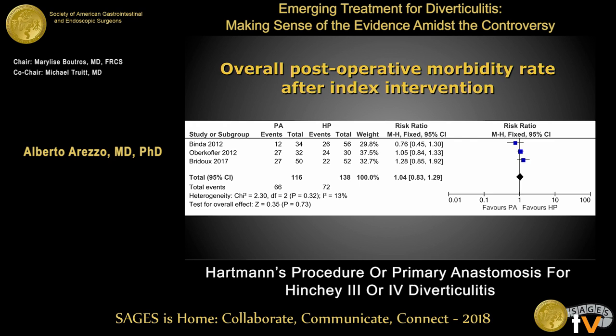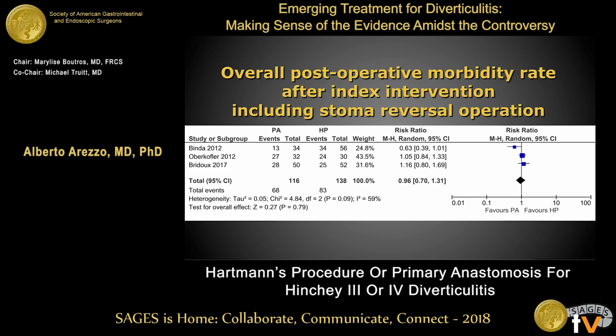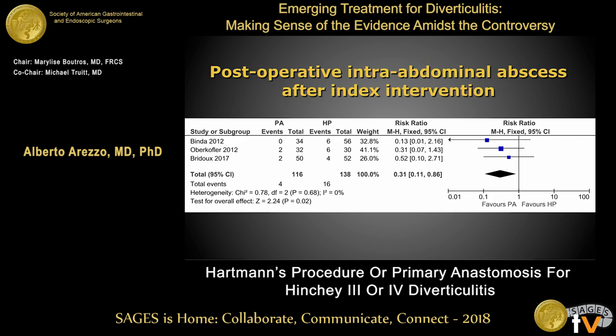Overall postoperative morbidity rate was almost the same in the two groups, even when restricting the analysis to more severe complications — including the stoma reversal operation. Interestingly, postoperative intra-abdominal abscesses were about one third in the primary anastomosis group compared to Hartmann procedure, which is the only significant difference that could be found in the data analyzed.